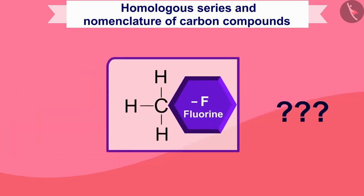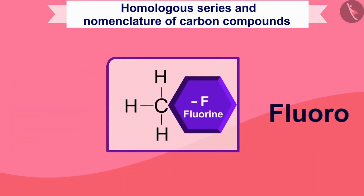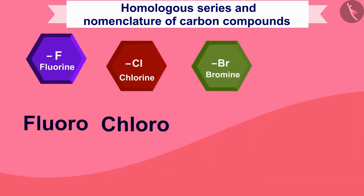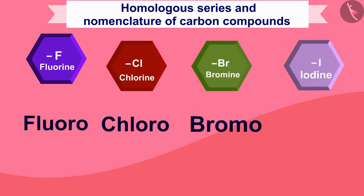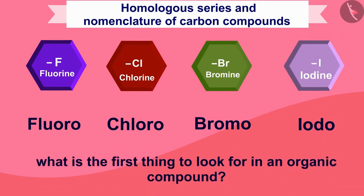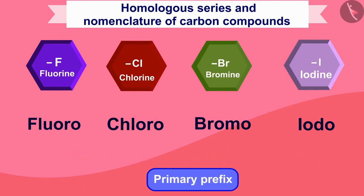If fluorine is added in a carbon compound, write 'fluoro' before the name. If chlorine is added, write 'chloro'. If bromine is added, write 'bromo'. So the first thing to look for in an organic compound is whether it contains fluorine, chlorine, bromine, or iodine, and we write the primary prefix accordingly.